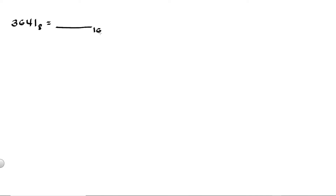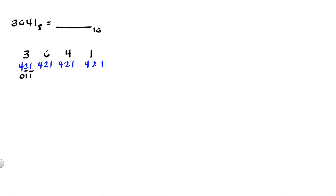For our second example, let's say we have 3641 octal and convert it into its hexadecimal form. First step is to rewrite 3641, giving each digit enough space, and convert them into binary. Starting from the right, we have 1, 2, and 4. 3 is the sum of 2 and 1, so those are 1s. And since we don't use 4, that is 0. Next we have 6, and 6 is the sum of 4 and 2, so those are 1s. And since we don't use 1, that is 0.